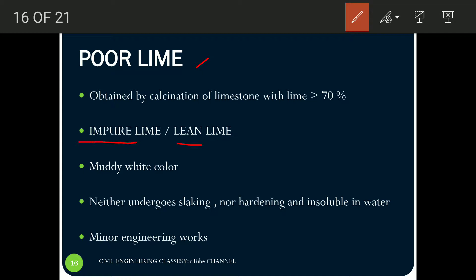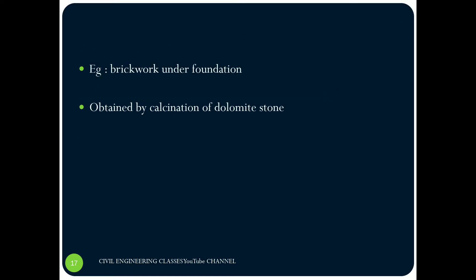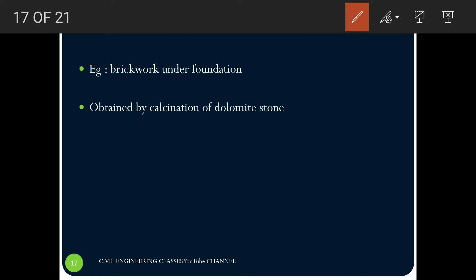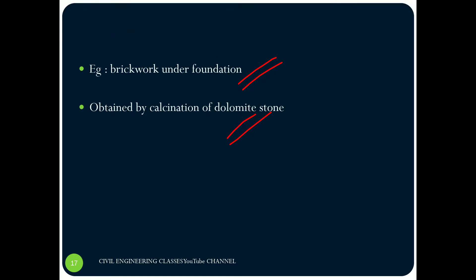The last type of lime is called poor lime. Its other names are impure lime and lean lime. From the name itself we know it has comparatively more impurities. It is obtained by the calcination of limestone with lime content greater than 70%. It has a muddy white color, is not favorable for slaking, and not favorable for hardening. Since the clay content is more, it is insoluble in water. Because of this, it is used only for minor engineering works, like brick work under the foundation. It is mainly obtained by the calcination of dolomite stone.